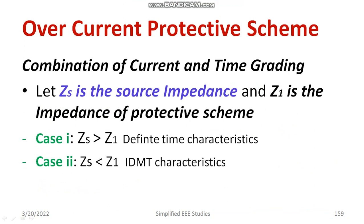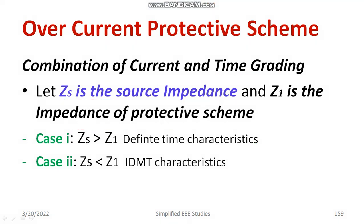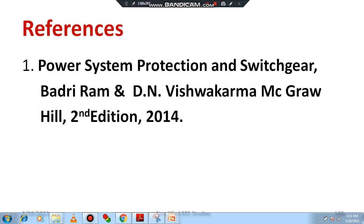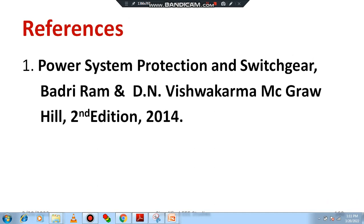Based on the current and time graded systems, the conclusions are: first, we have to consider the source impedance. If the source impedance is greater than the impedance of the protective schemes, then it has definite time characteristics. Conversely, if the source impedance is less than the impedance of the protective schemes, then it shows IDMT characteristics. These are the two key points to keep in consideration for the combination of current and time grading. In this video I have discussed the major protective schemes used in overcurrent protection. I have referred to the textbook 'Power System Protection Switchgear' by Bhattri Ram. Thank you for watching.